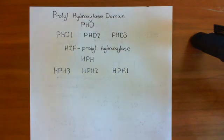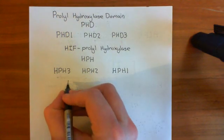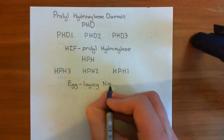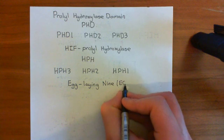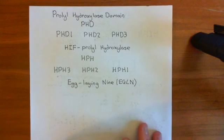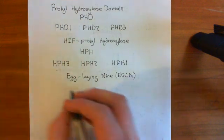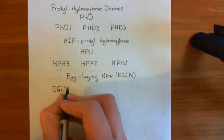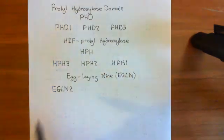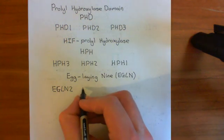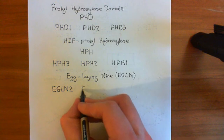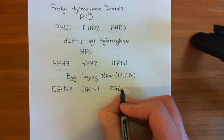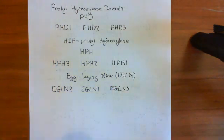There is yet another name for these enzymes, and this is the most confusing one: the egg-laying-9 enzymes, abbreviated EGLN (EG for egg, L for laying, N for 9). PHD1 (HPH3) is also known as EGLN2. PHD2 (HPH2) is also called EGLN1. And PHD3 is also called EGLN3. So there are three different names for each enzyme with numbers that don't correspond across systems.